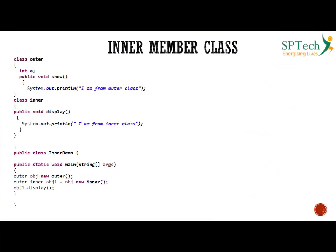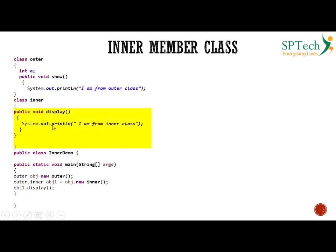The first type is the member inner class. Observe this program: you have a class called outer, and within this class you have a method called show. A class can have variables as well as methods — class members or methods. Inside this outer class you have another class called inner, and inside the inner class you have a method called display, which prints 'I am from the inner class'.